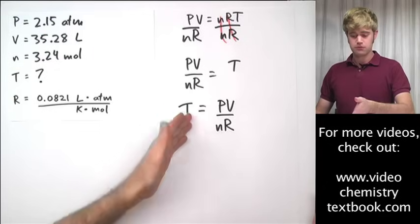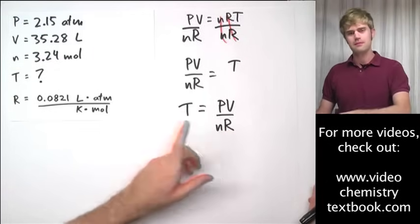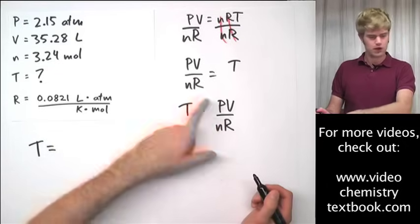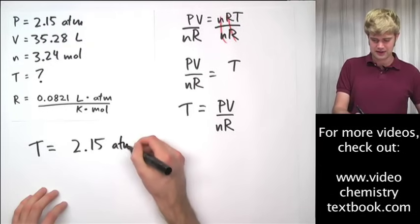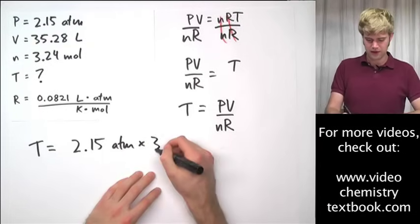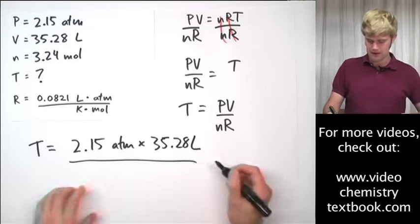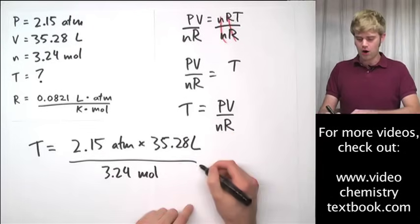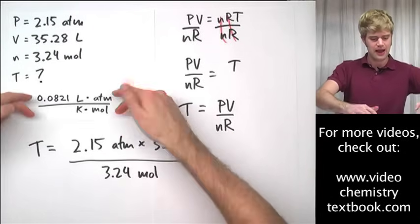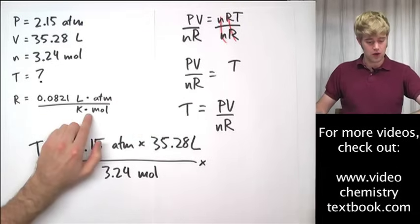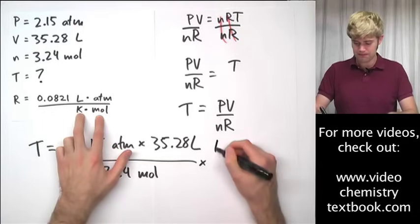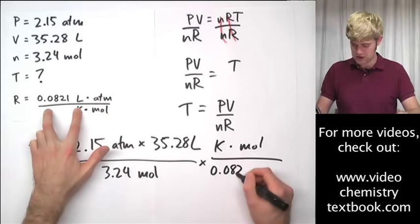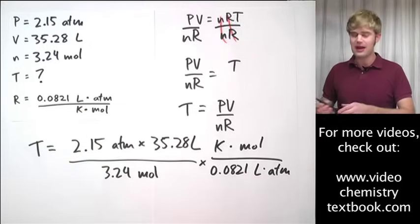Let's go ahead and plug these variables in. Now, here R is on the bottom. I'm going to show you what I do with that, but we're going to leave it until last, just like we did before. So, T equals pressure, 2.15 atm times volume, 35.28 liters divided by n, which is 3.24 moles. And what I do when R is on the bottom is I take R and I flip it upside down. Okay? So, what is normally on the bottom? Kelvin moles is going to be on the top. And what is normally on the top? 0.0821 liters atmospheres is going to end up on the bottom.